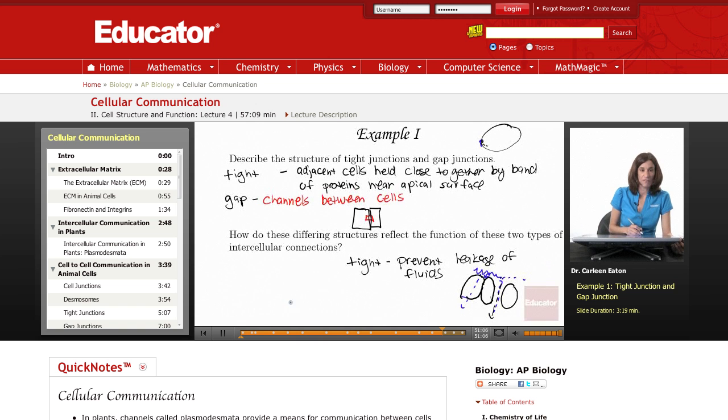Gap junctions have different functions. One function of gap junctions is electrical coupling. Electrical coupling is the coordination of charge between cells, and this occurs in the nervous system. It also allows the heart to beat in a coordinated manner.